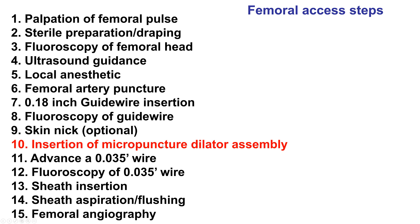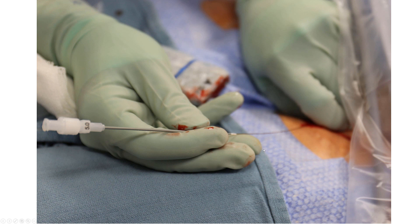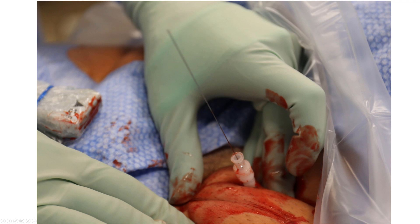We're at step number 10: getting the micropuncture dilator inside the vessel. This usually goes smoothly. However, even if it goes okay, it is important to perform fluoroscopy because sometimes, although the tip may seem to be on the skin, it is possible that there is some coiling or some kinking inside the subcutaneous tissue.